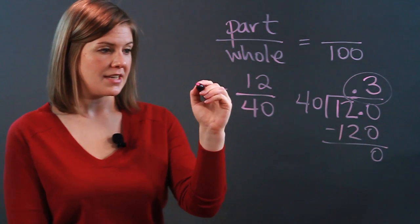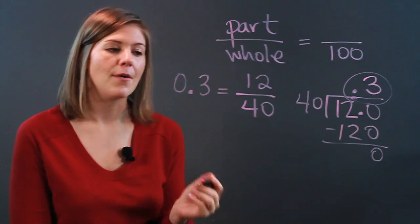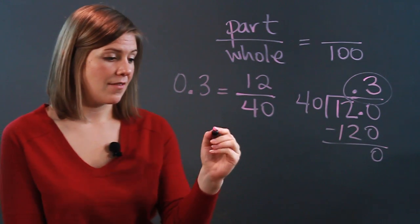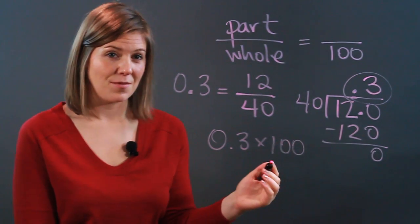So here, 12 over 40 is the same as 3 tenths, written just like this. How can I make this into a percentage? I just multiply it by 100. So I have 0.3 times 100, and that will give me my percent.